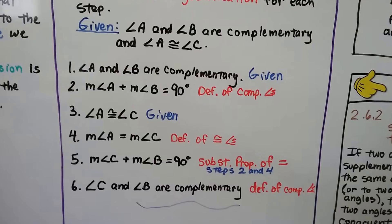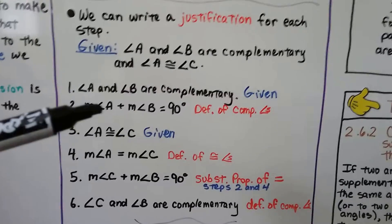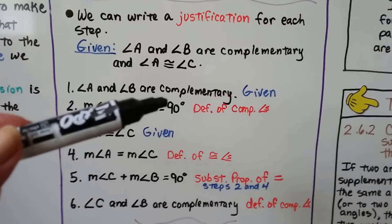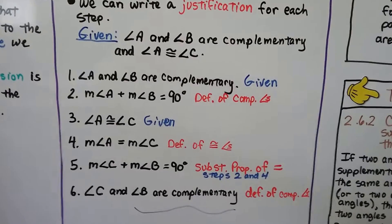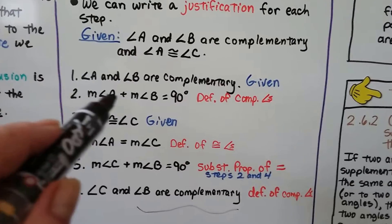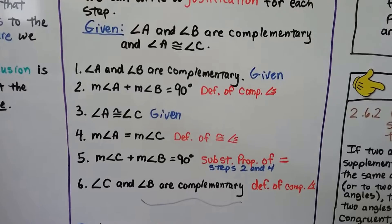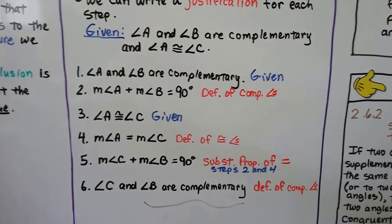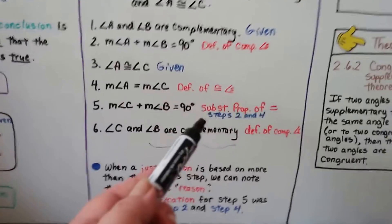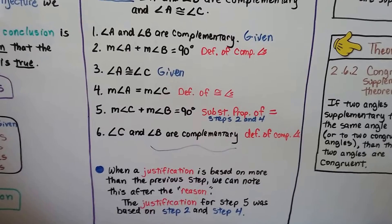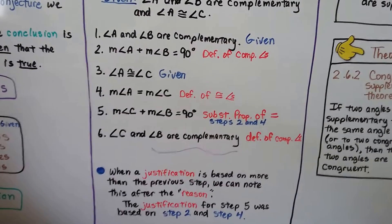Our fifth statement is the measure of angle C plus the measure of angle B equals 90 degrees. This is the substitution property of equality. If A plus B equals 90 degrees and A and C are equal to each other, then C plus B is going to equal 90 degrees. So we substituted the measure of angle C in place of the measure of angle A — that was the substitution, based on steps two and four. When a justification is based on more than the previous step, we can note this after the reason, like I did by writing 'steps two and four.'